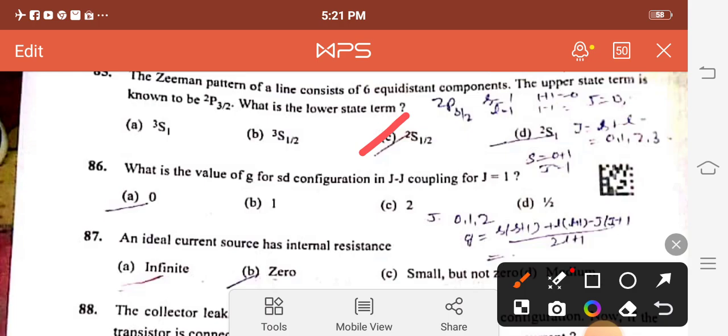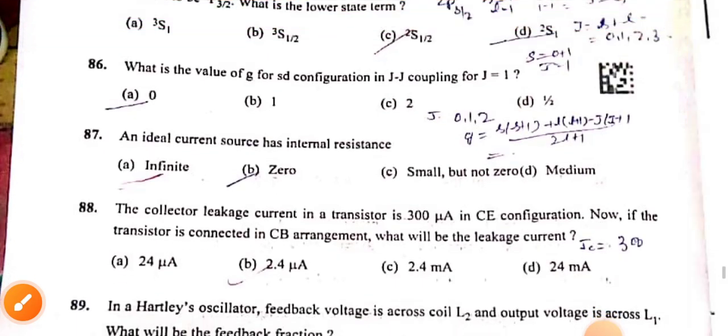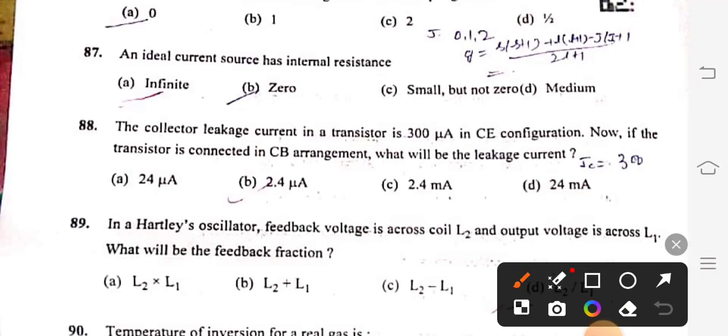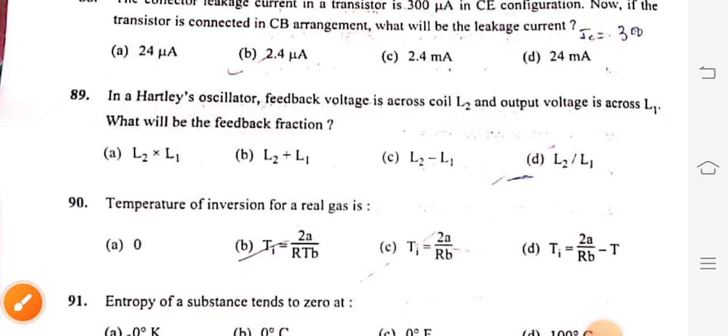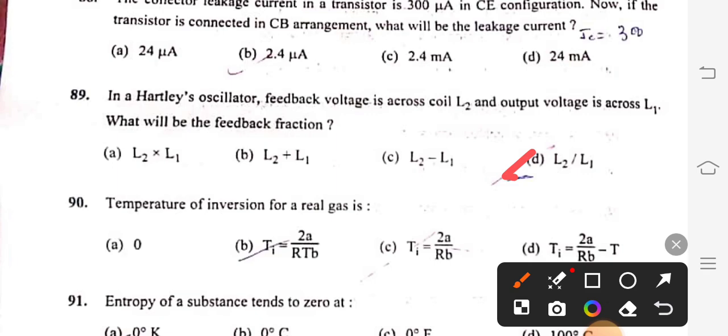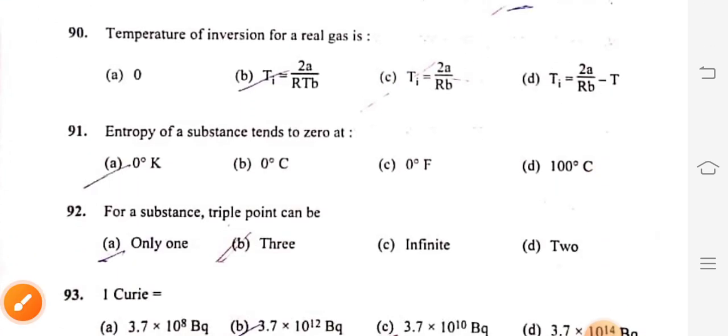Question 86: What is the value of G for SJ configuration in JJ coupling for J equals 1? I am not sure, you can comment. Question 87: An ideal current source has internal resistance infinite, option A. Question 88: The collector leakage current in transistor is 300 microampere in CE configuration. If the transistor is connected in CB configuration, the leakage current will be 2.4 microampere, option B. Question 89: In Hartley oscillator, feedback voltage is across coil L2 and output voltage is across L1. The feedback fraction is L2 by L1, option D. Question 90: Temperature of inversion for a real gas is 2A upon Rb, option C.